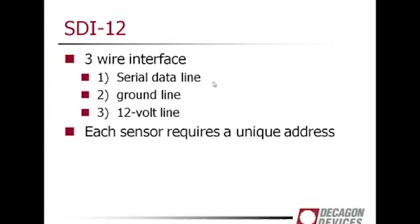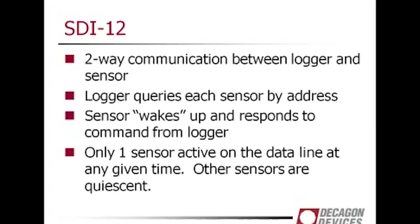With SDI-12 you have a data line, a ground line, and a 12-volt line. Each sensor requires a unique address or name — this is how you can communicate with many sensors on the same line. It's two-way communication between the logger and the sensor. The logger queries each sensor by its address, the sensor wakes up and responds to a command. There's only one sensor active on the data line at any given time; all other sensors are quiescent and basically in listening mode.